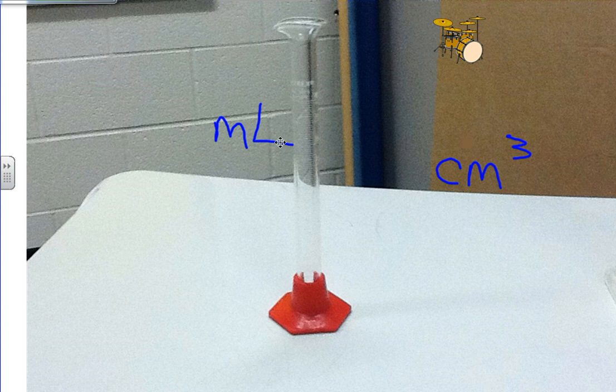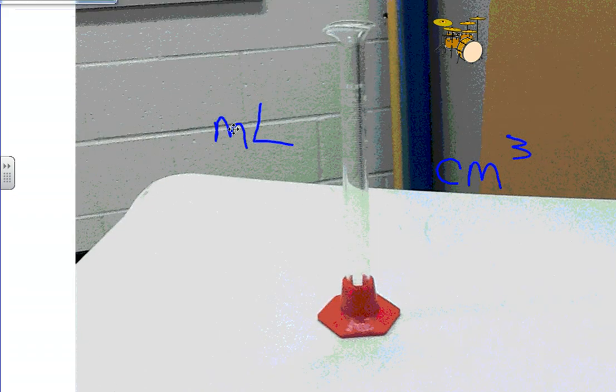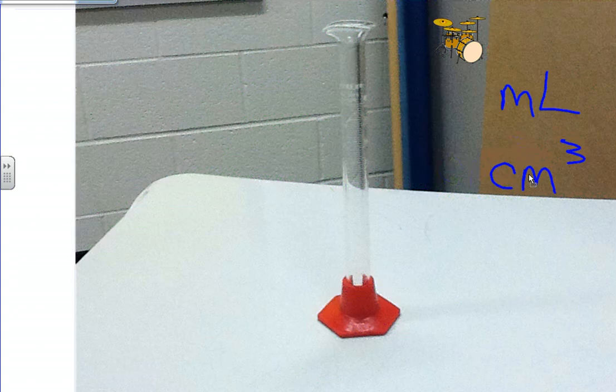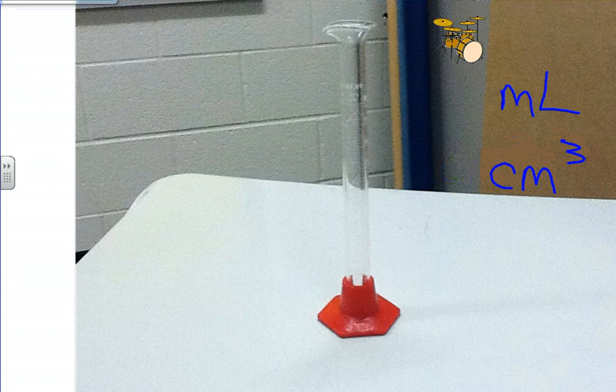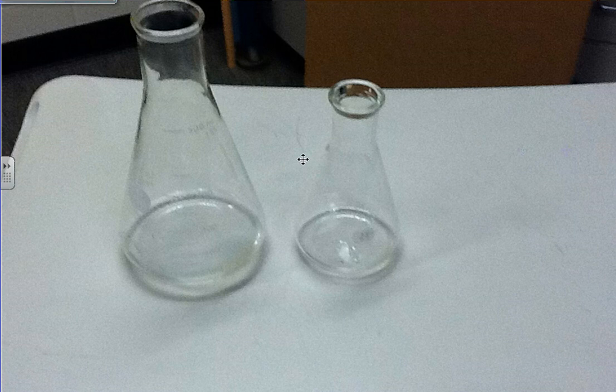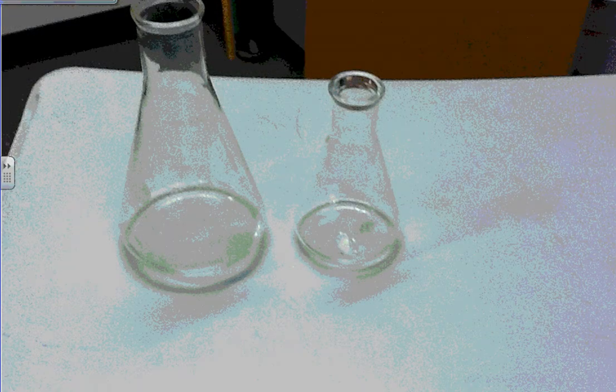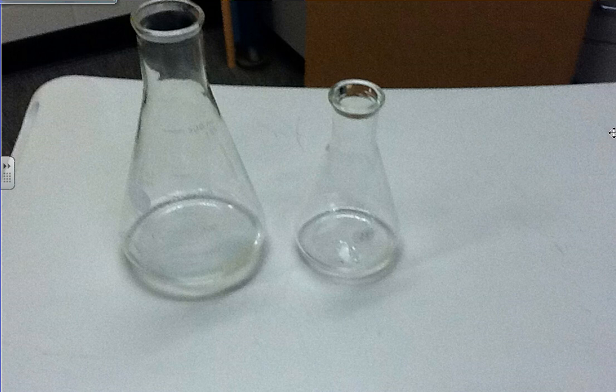This next item, can you guess it? Think hard. Sometimes we use it to measure volume using milliliters or even cubic centimeters for other objects. Milliliters would be for liquid, cubic centimeters for solid objects. If you guessed graduated cylinder, go ahead and give yourself another round of applause. Next item, what could it be? This looks like a tie and it is some type of flask. Perhaps he's related to Florence, and we call this the Erlenmeyer flask.